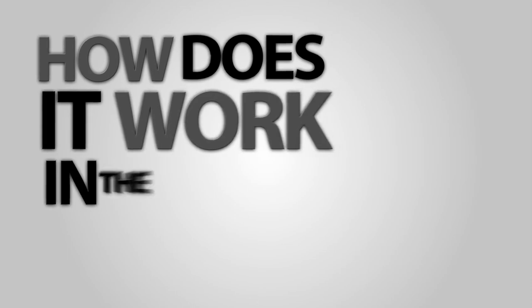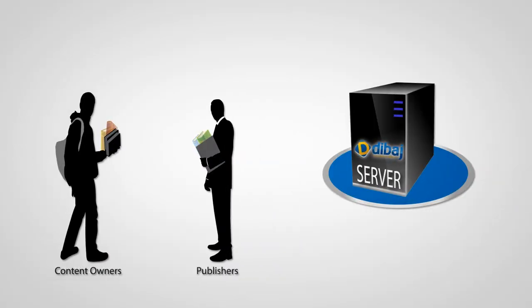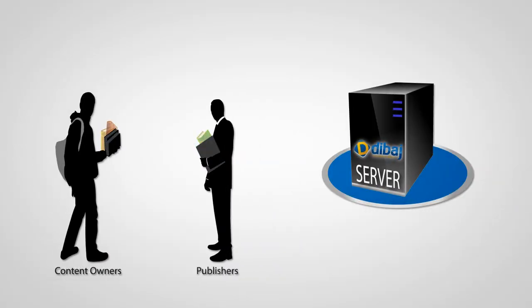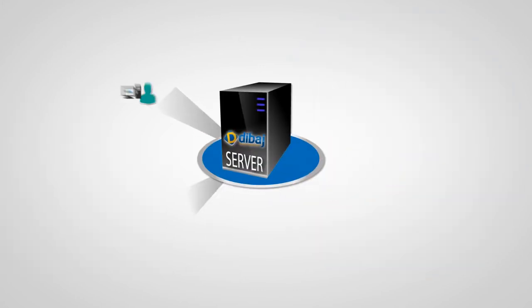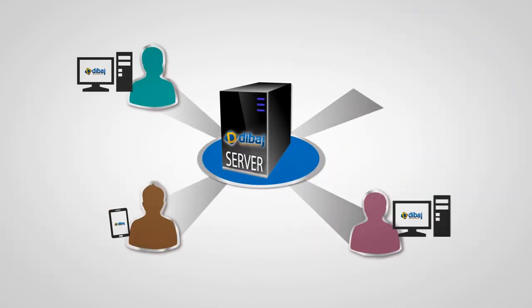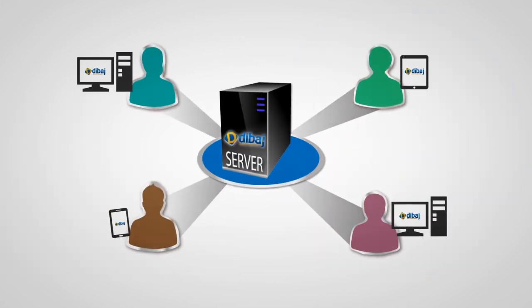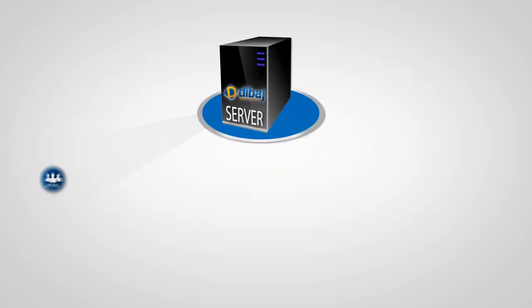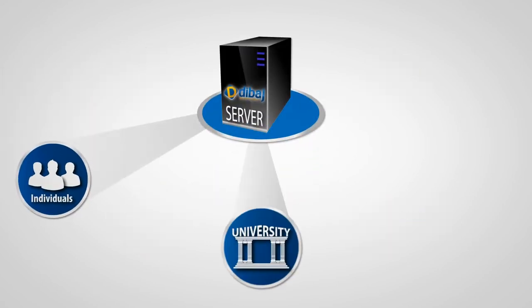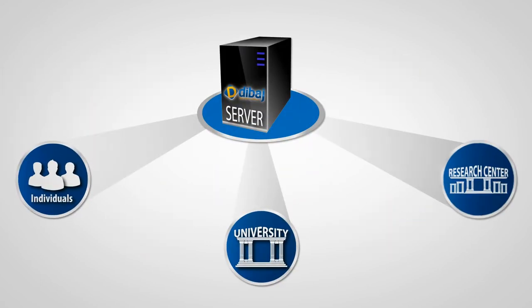How does it work in the real world? Content owners and publishers deposit their journals and e-books on our secure servers. Users browse this content on Dibage, which is DRM protected. Individuals, universities and academic research centers can browse through the excerpt and even see a description before adding it to their cart.